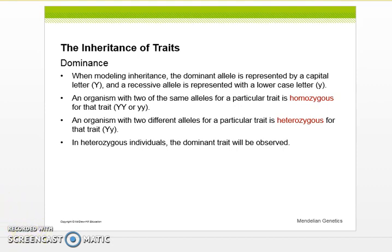So an organism with two of the same alleles for a particular trait is homozygous for that trait. Homozygous, homo meaning same. So that means an organism would have two capital letters or it can have two lowercase letters. It's either homozygous dominant capital or homozygous recessive lowercase.